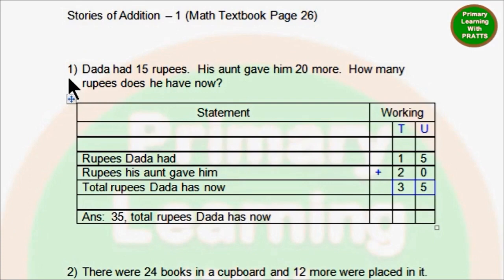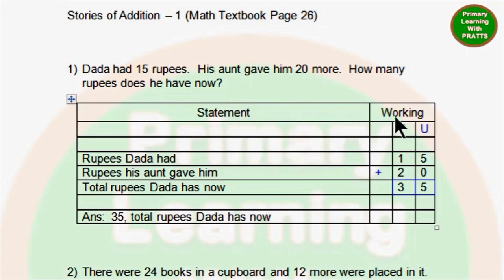First story sum: Dada had 15 rupees. His aunt gave him 20 more. How many rupees does he have now? We will write the statement and working, underlined in blue pencil. First statement: Rupees Dada had — 15.